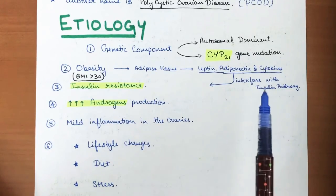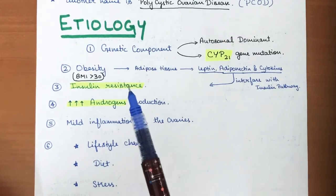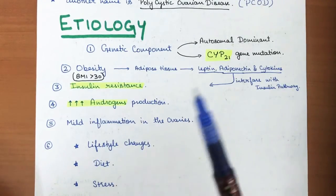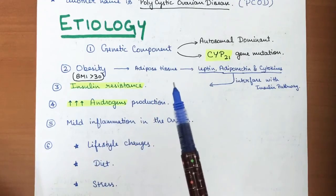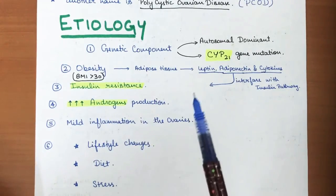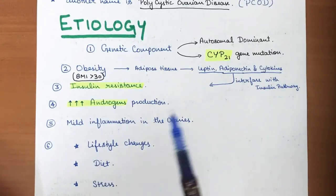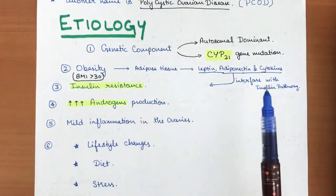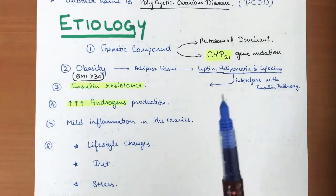Leptin, adiponectin, and cytokines interfere with the insulin pathway, making the system resistant to insulin. Insulin is produced in normal amounts but is not properly utilized, leading to insulin resistance and hyperinsulinemia, with insulin accumulating inside the body.